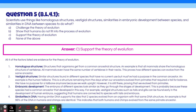The second is vestigial structures. These are similar structures found in different species that have no current use, but must have had a purpose in the common ancestor. An example is the human tailbone. This is a structure remaining from the days when our ancestors evolved from primates that required a tail for balance. We have no purpose for a tailbone anymore because we walk upright. However, it is still there, proving that we evolved from primates.